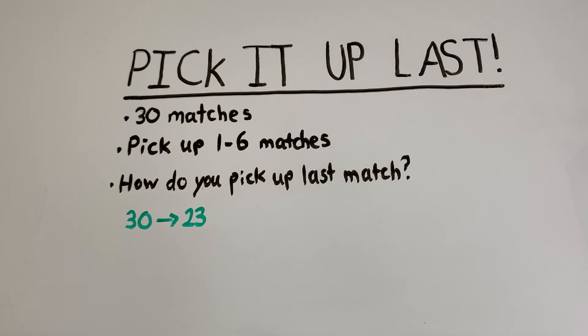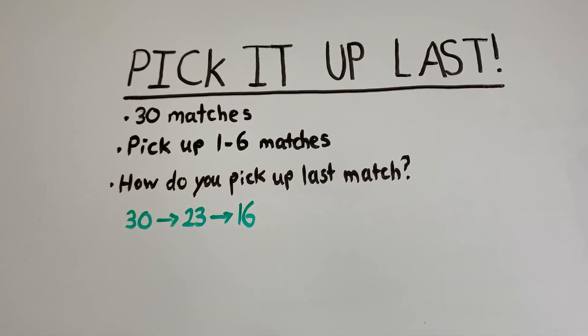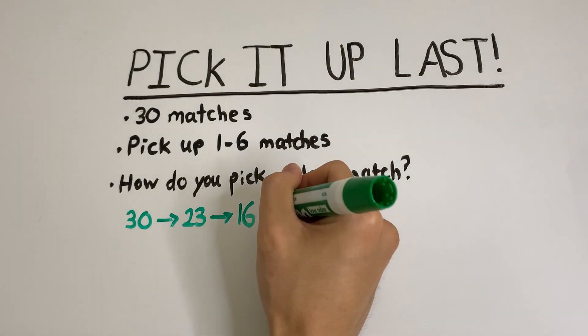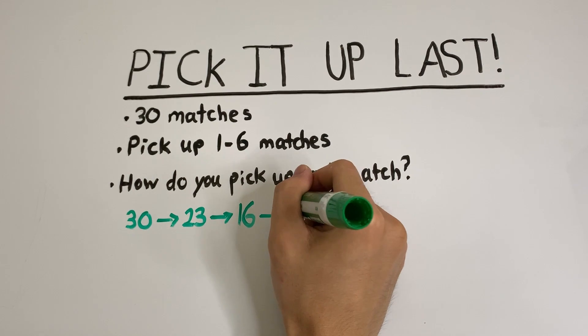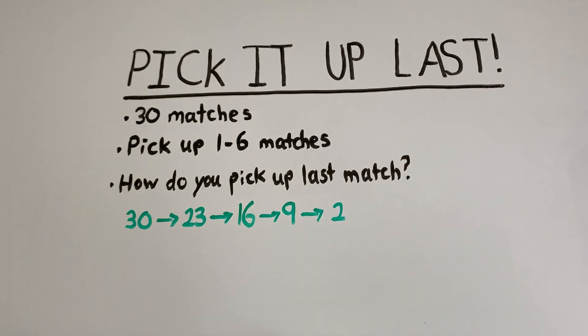Now to pick up match number 23, we would have to pick up match number 16, because then they can pick up anywhere between match number 17 and 22, and then we can pick up number 23. Then they would only be able to pick up anywhere between match number 24 and 29, and then we can pick up number 30. Now to pick up match number 16, we would have to pick up match number 9. And to pick up match number 9, we would have had to have picked match number 2. So the winning strategy is to take two matches at the start. Then we can get this forced sequence and there's no way that our friend can possibly win.